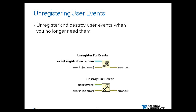To summarize what you can do with user events: you can programmatically create and name your own events to carry user-defined data. Like queues and notifiers, user events allow different parts of an application to communicate asynchronously — which is the core need for using them. You can handle both user interface events and programmatically generated user events in the same event structure, so there is no need to create separate structures for each type.